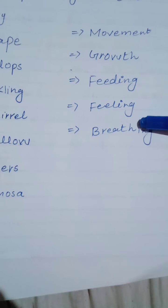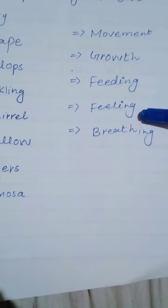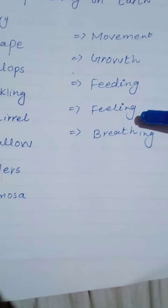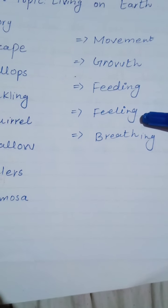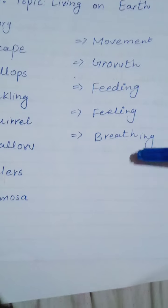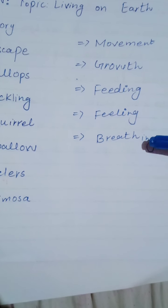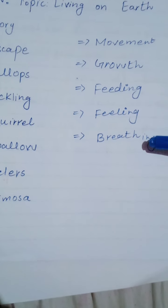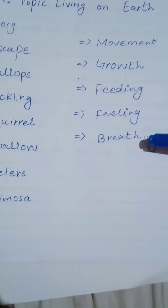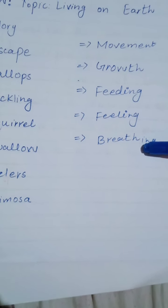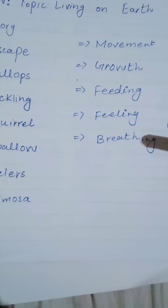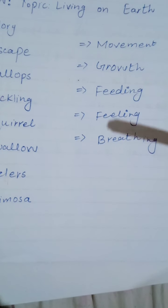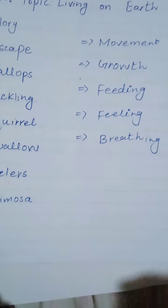Feeding, feeling — some plants also can feel. The example is a mimosa plant. Breathing: we can breathe with help of nose, and fish can breathe with help of gills, and the plants can breathe with help of stomata.